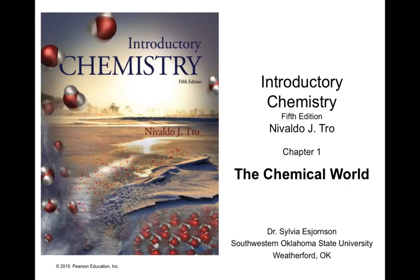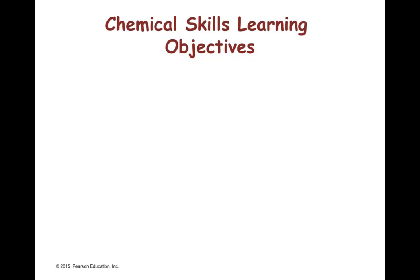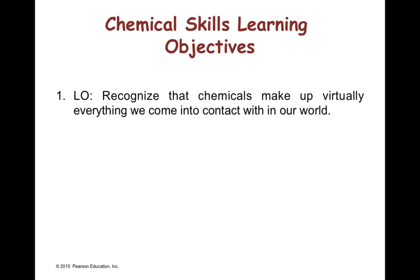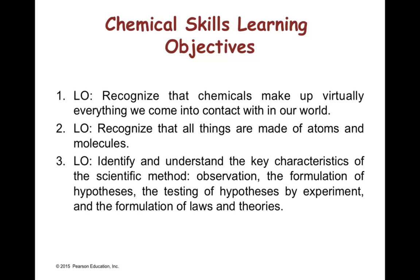During this module we will be discussing chapter number one, the chemical world from our textbook. By the end of this chapter you will be able to recognize that chemicals make up virtually everything we come into contact with in our world. Also you will be able to recognize that all things are made of atoms and molecules. And finally you will identify and understand the key characteristics of the scientific method: observation, the formulation of hypothesis, the testing of hypothesis by experiment, and the formulation of laws and theories.